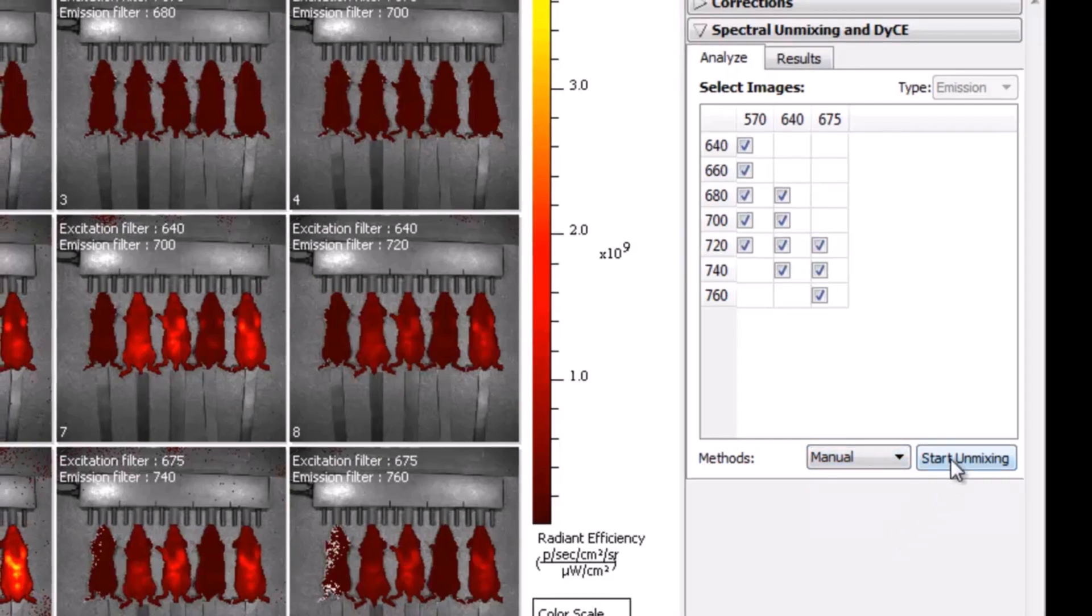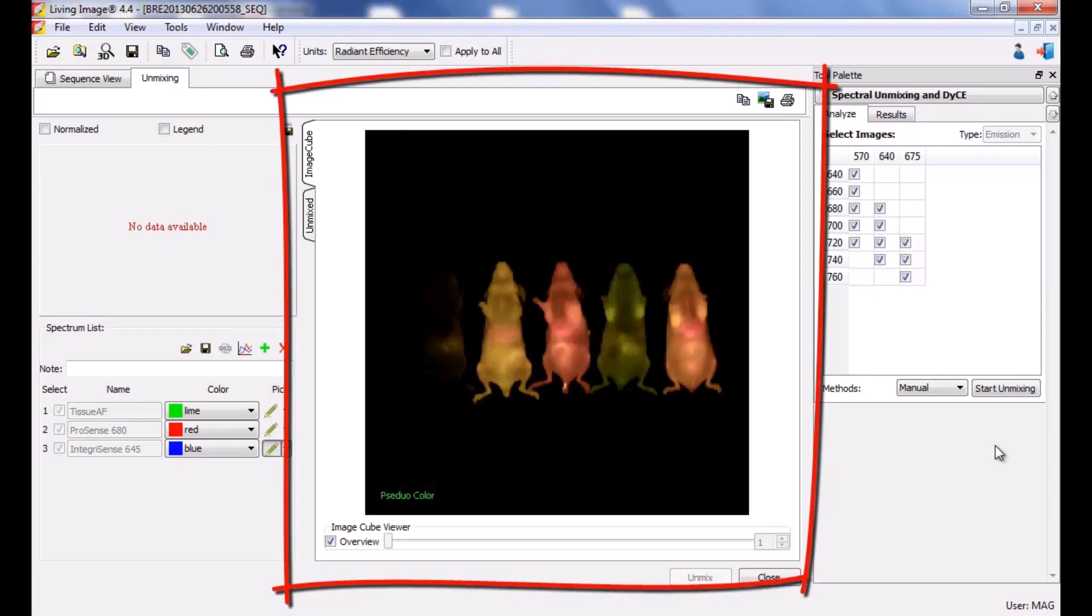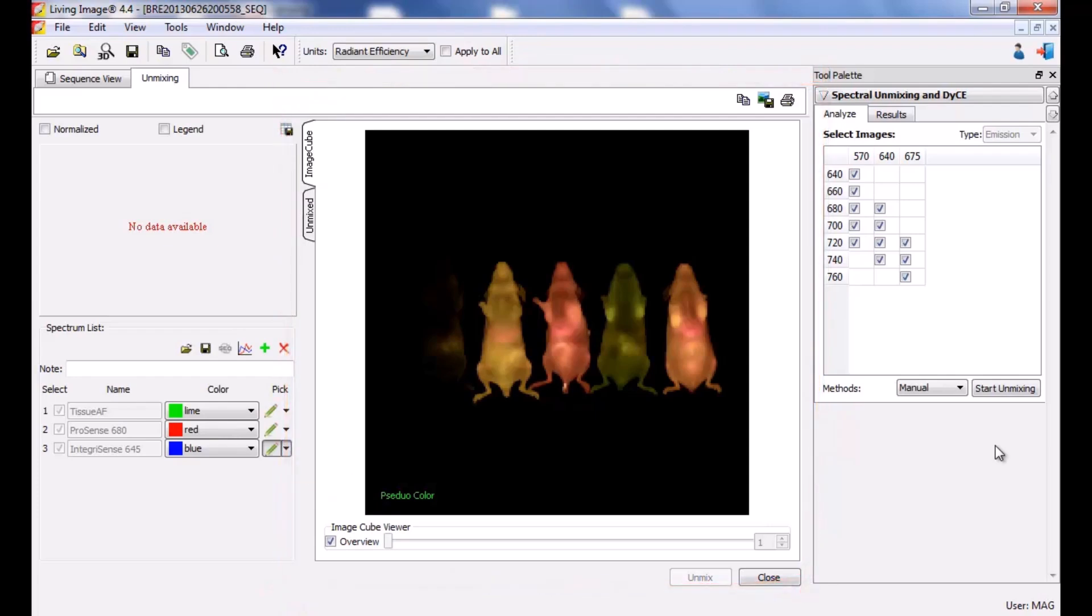Click start unmixing. The image window will display with three sections. First is the large image cube viewer, essentially a z-stack of all images from the sequence superimposed onto each other. To view individual images, uncheck the overview box. The second is the spectral graph on the top left. It shows the average intensity as a line for a pixel or group of pixels throughout the emission scan. The spectrum list on the bottom left contains drawing tools for selection of pixels that will be utilized to generate our probe curves. Our components are pre-labeled based on the imaging wizard setup: tissue autofluorescence, the 680 probe, and the 645 probe.